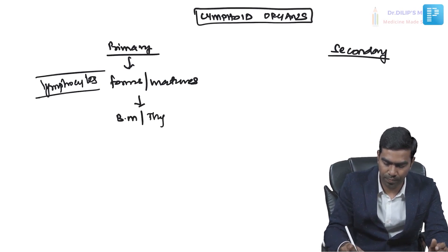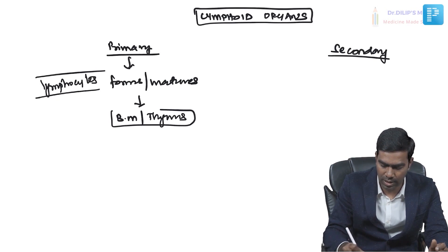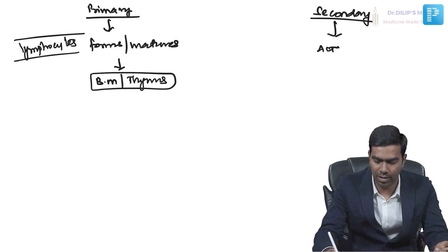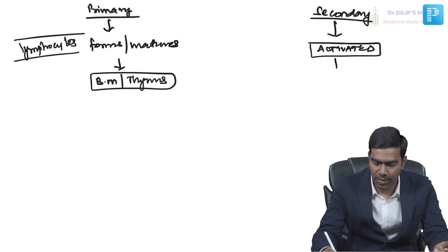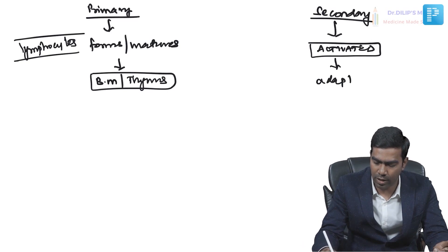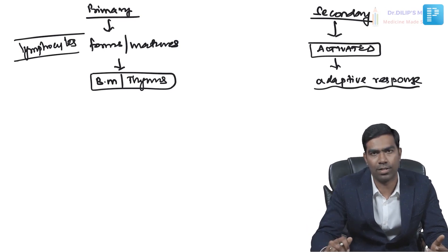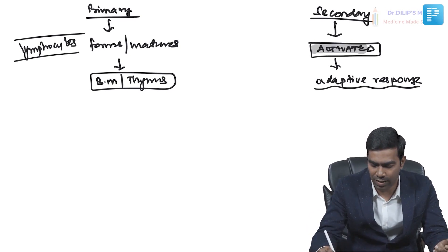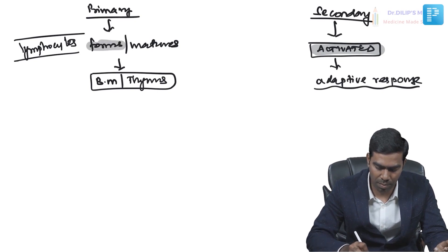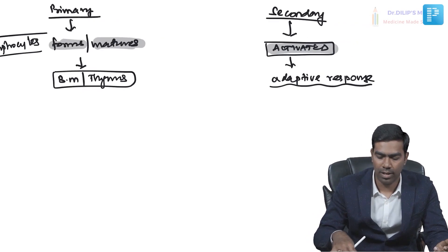There are two types of lymphoid organs: primary and secondary. The primary lymphoid organs are the bone marrow and the thymus — the areas where lymphocytes form and mature. The secondary lymphoid organs are where lymphocytes are activated, generating an adaptive response. Formation and maturation happen in primary lymphoid areas; activation happens in secondary lymphoid areas.